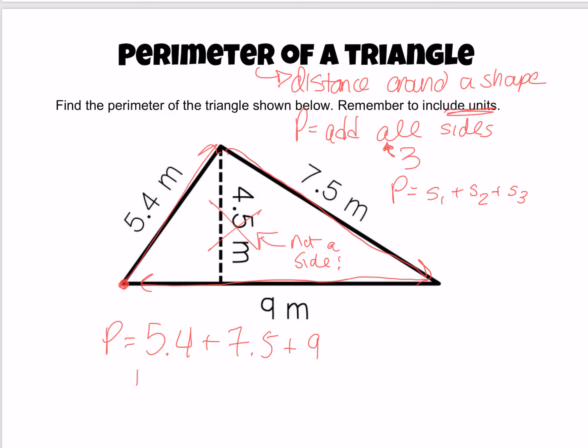Now I'm going to add them up. Add them up in whatever way you want. Use a calculator. You should get 21 and 9 tenths, but we're not done yet because we need our units. We're talking about perimeter. We're talking about meters.